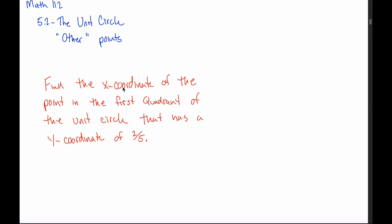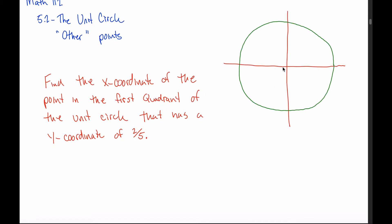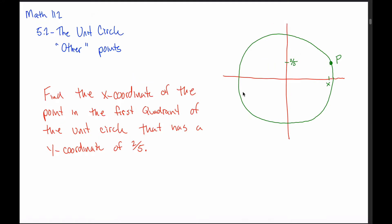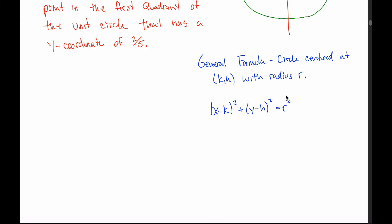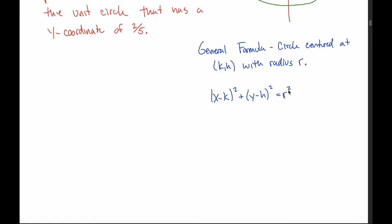While we don't have to memorize the coordinates and angles of all other points on the unit circle, I want to show you the types of questions you can ask about them. For example, what if you were asked to find the x-coordinate of the point in the first quadrant of the unit circle that has a y-coordinate of 2 fifths? This point has y-coordinate 2 fifths — a little bit below 1 half — so we can call it point P. Given that its y-coordinate is 2 fifths, we're trying to figure out what its x-coordinate is.